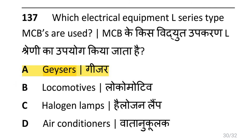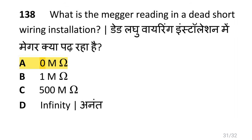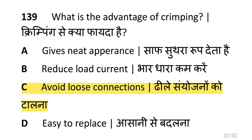Which electrical equipment uses L series type MCBs? That is geysers. What is the MAGR reading in a dead short wiring installation? That is zero mega ohm. What is the advantage of crimping? That is to avoid loose connections.